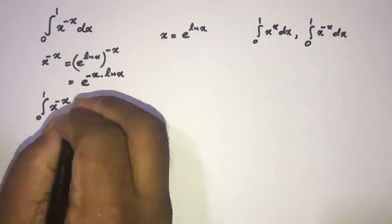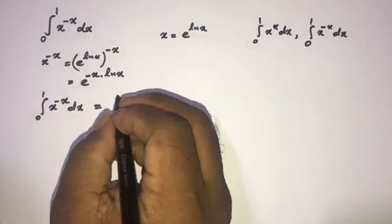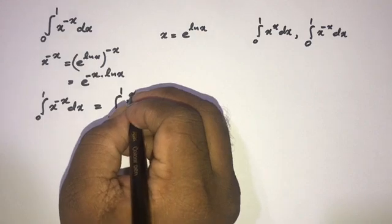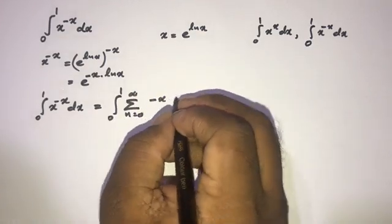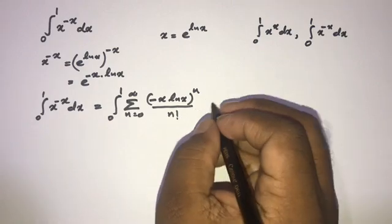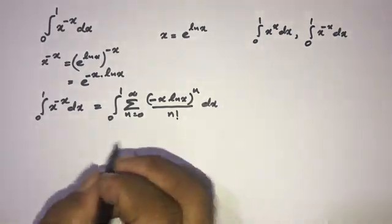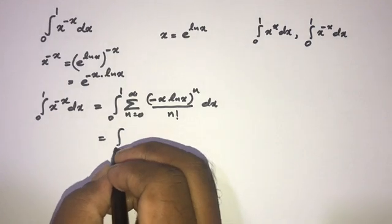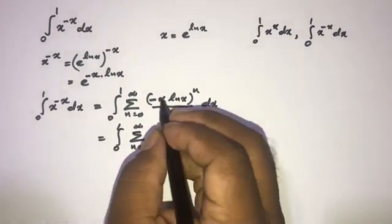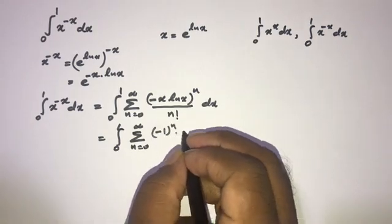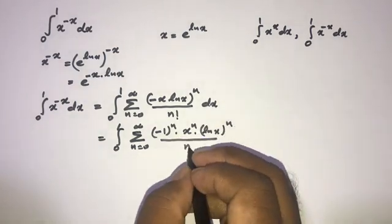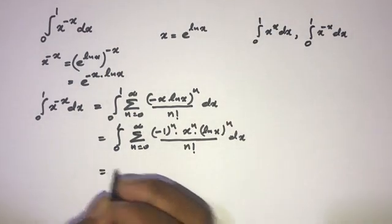Now our integral from 0 to 1 of x^(-x) dx can be written as the integral from 0 to 1 of the sum from 0 to infinity of (minus x times natural log of x) to the n power over n factorial dx. We can expand this as the sum from 0 to infinity of (minus 1)^n times x^n times (natural log of x)^n over n factorial, all inside the integral from 0 to 1.